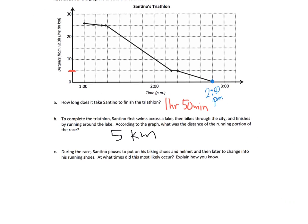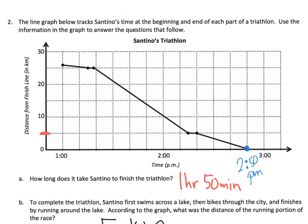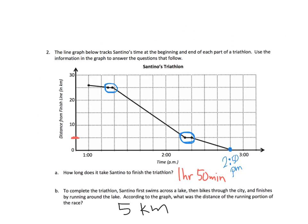And then the last little question says during the race, Santino pauses to put on his biking shoes and helmet and then later to change into his running shoes. At what time do those things occur? So the idea is when he stops to put on shoes or stops to take off shoes, he's not making any progress. So when the line is slanted like this, that means he's making progress, he is cutting the distance between him and the finish line. What we're going to do is look for two little flat spaces - one right here and one right here. And what's happening at those two flat spaces means time is ticking but he's not making any progress to the finish line. So those are the two times that he likely was putting on his biking shoes and then putting on his running shoes.